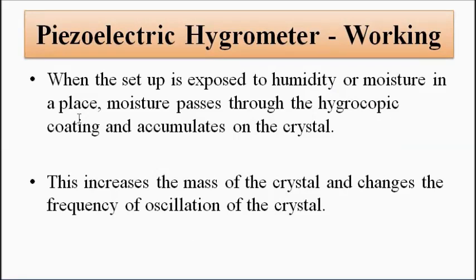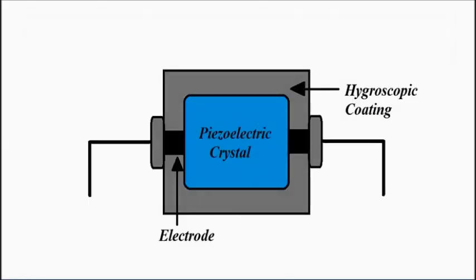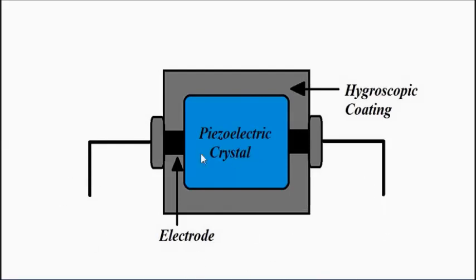How does this whole setup work? When this sensor is exposed to a moist environment, the moisture passes through the hygroscopic coating to the piezoelectric crystal. When the moisture reaches the piezoelectric crystal, the mass of the crystal starts to increase. Because of this increase in mass, the vibration frequency will change. When we connect an AC voltage across the two electrodes and supply a voltage, the crystal will vibrate with a certain frequency.